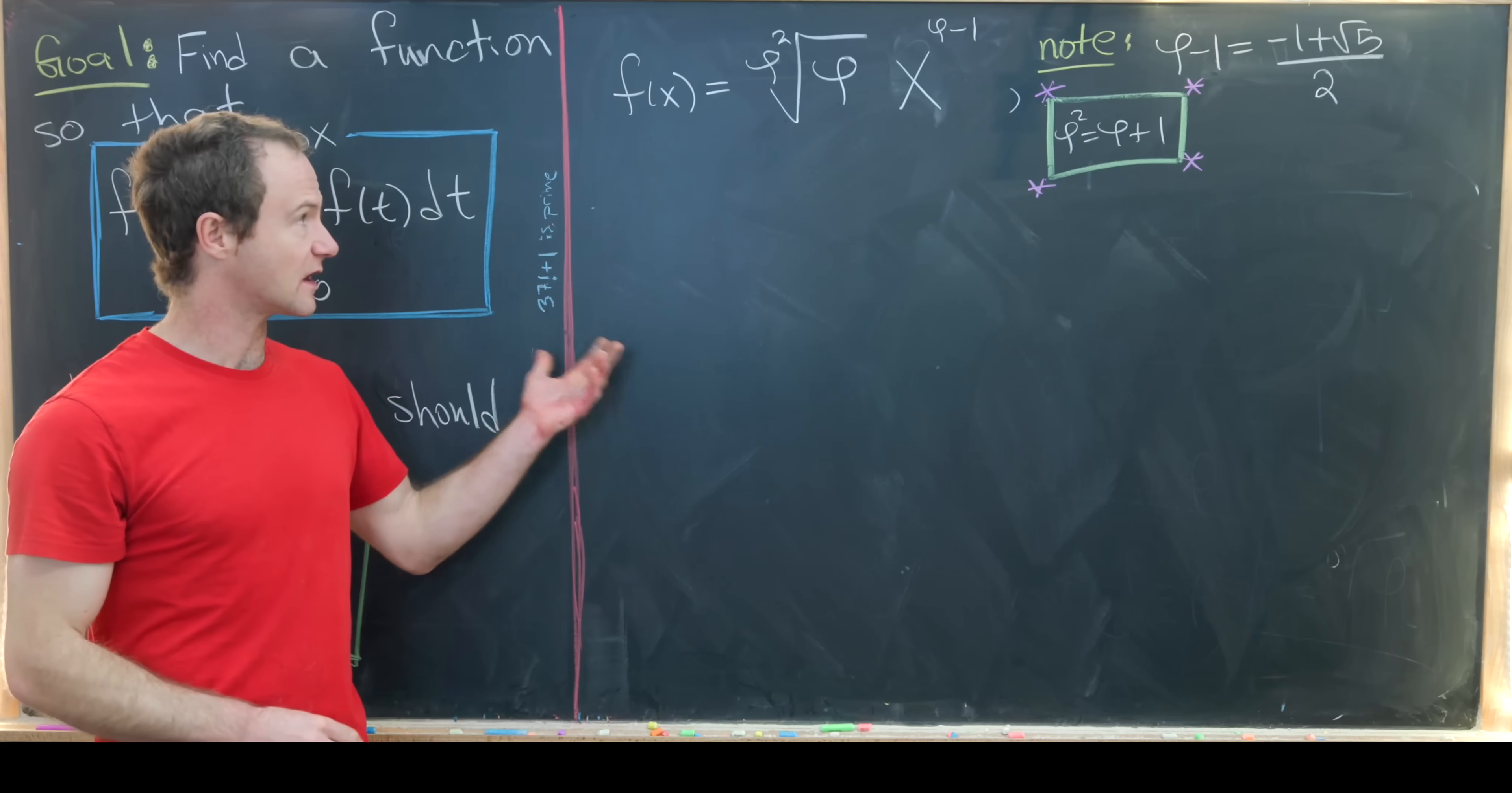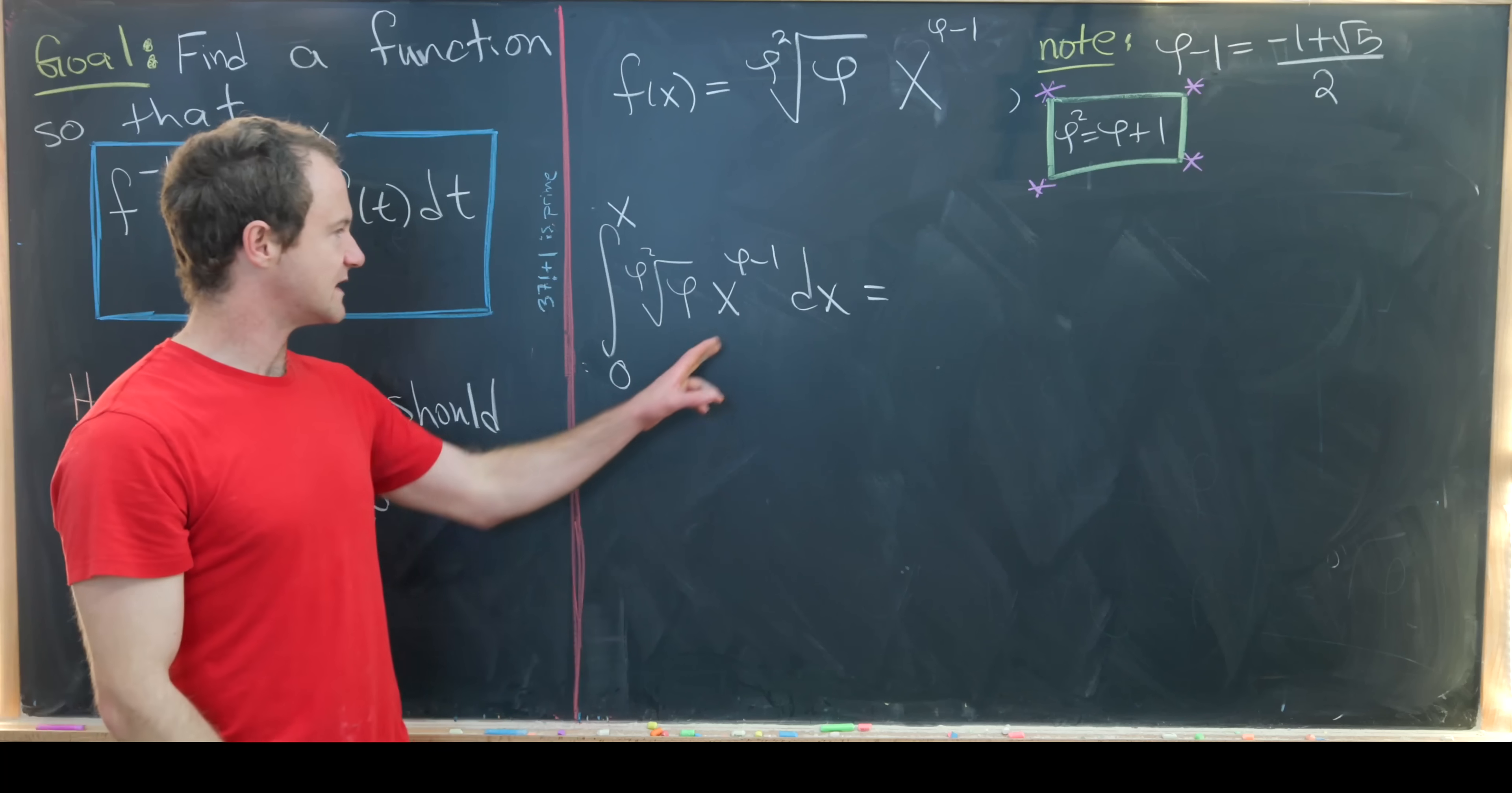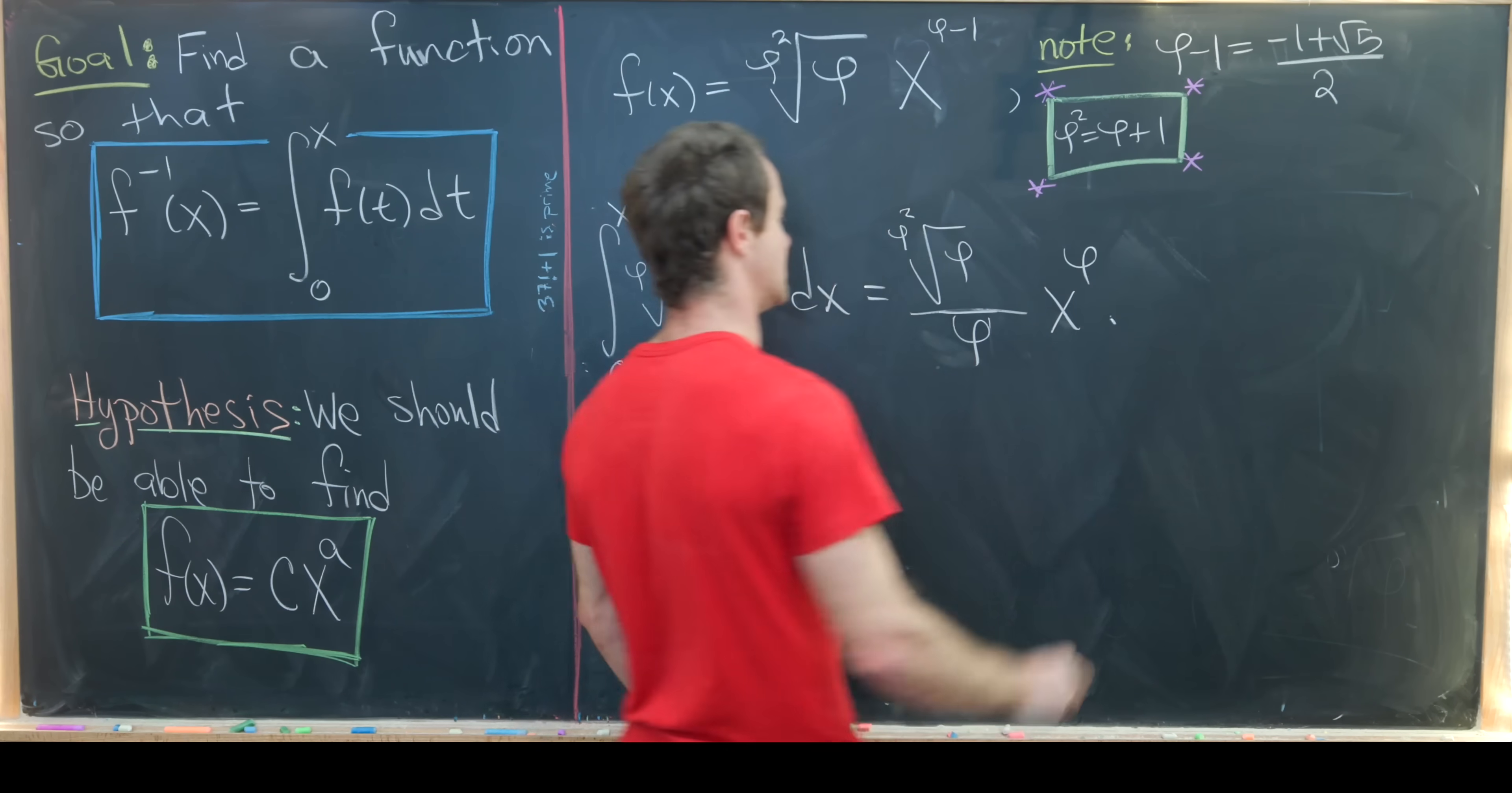Let's go ahead and check this. Let's first take the antiderivative. If we do the integral from 0 to x of the phi squared root of phi times x to the (phi - 1) dx, we increase the exponent by 1 and divide by the new exponent. That gives us the phi squared root of phi divided by phi (since phi minus 1 plus 1 is just phi), and then we have x to the phi.